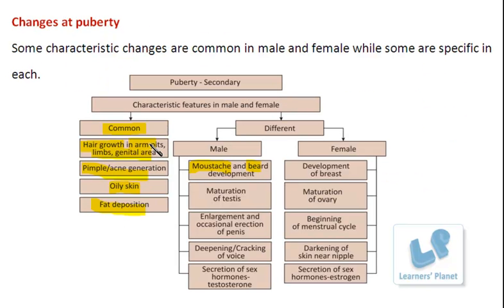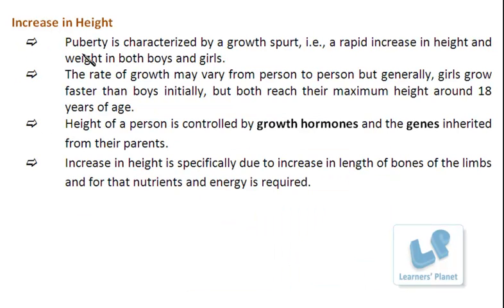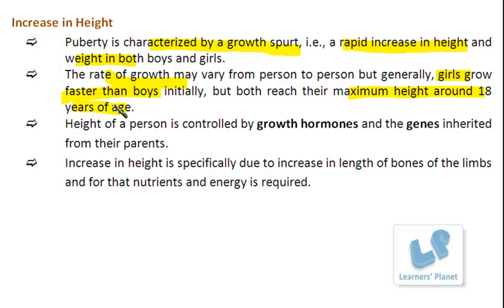The next common feature is the increase in height. Puberty or adolescence is characterized by a growth spurt — a rapid increase in the height and weight of boys as well as girls. The rate of growth varies from person to person, but generally girls grow faster than boys initially. Both will reach their maximum height around 18 years of age. Nowadays, individuals with quite short height undergo hormone therapy to increase their height, but these externally taken hormones are not very good as they disturb the normal hormone balance in the body.